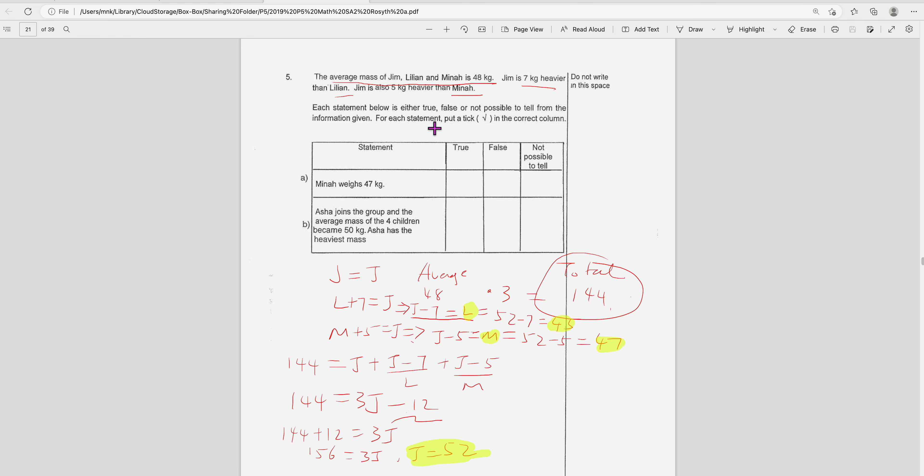Next they say now Asha joined the group and the average mass of four children is 50. So that means the new total will be 4 times 50, which is 200. After Asha joins, the old total is 144, and the new total is 200. So new total minus old total, that is Asha's weight.